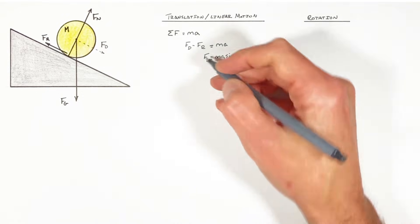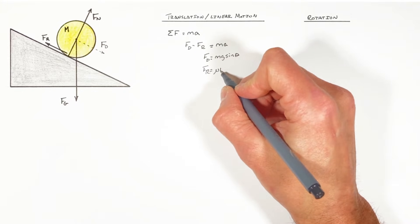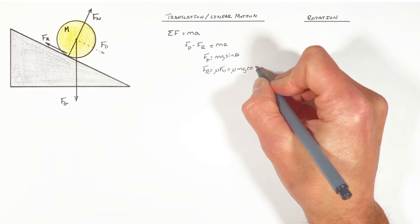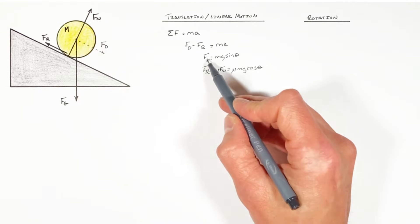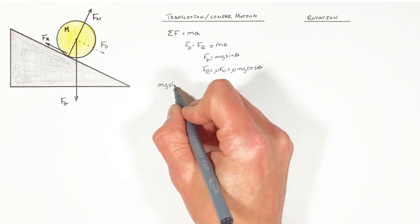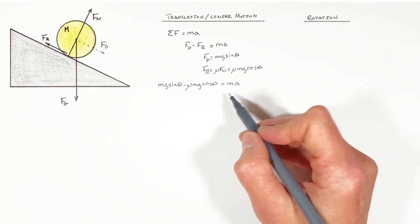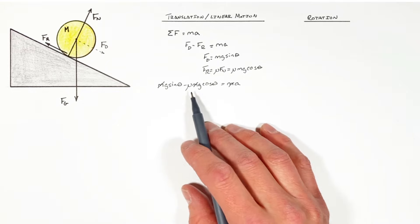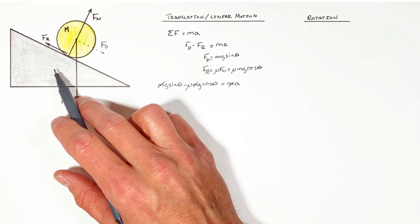The force down the hill is mg sinθ, and friction is given by μFₙ or μmg cosθ. Substituting these two expressions into Newton's second law, we get an expression where the mass of the ball cancels out. Once we have this expression, we can solve for the coefficient of friction between the object and the hill, provided we know the acceleration of that rolling object down the hill.